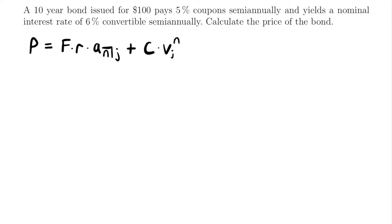Let's identify the values from the problem. We have a 10-year bond, but you might be tempted to say n equals 10 — that's not quite right. Since coupons are paid semi-annually, there are two semi-annual periods in one year, so we multiply 10 by 2 to get n equals 20 coupon periods.